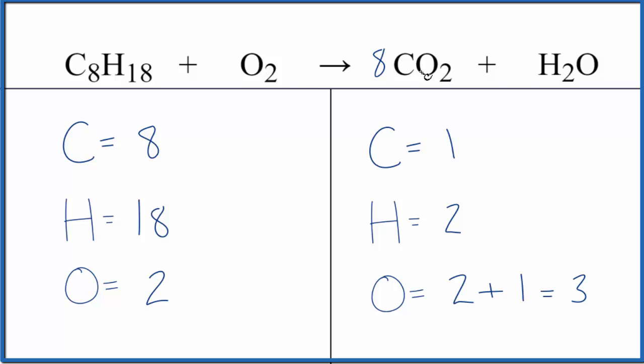Let's put an 8 in front of the carbon dioxide. 1 times 8, that gives us 8. This 8 goes to everything, so we've got to update the oxygens. So 8 times 2 is 16, plus we have that one oxygen there with the water. It's 17 oxygen atoms.